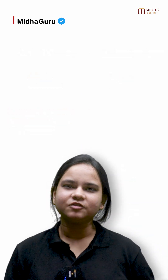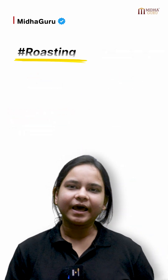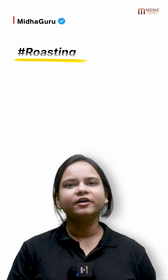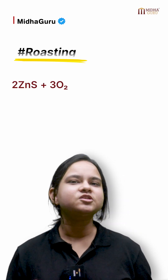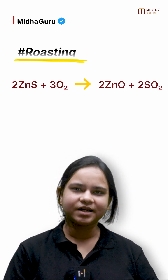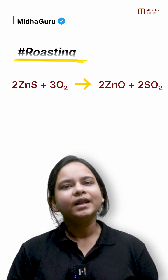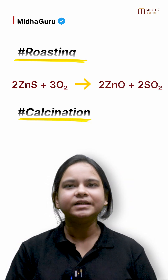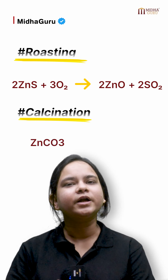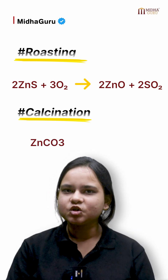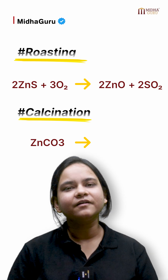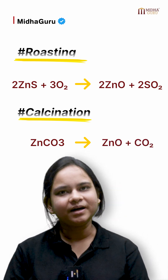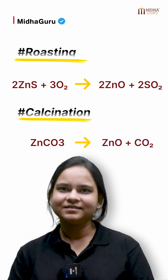Now let's check the equations for both. In case of roasting, for example, if we heat zinc sulphide ore in the presence of excess of oxygen, it gives out zinc oxide and sulphur dioxide gas. In case of calcination, if we heat zinc carbonate ore in the absence of sufficient oxygen, it gives out zinc oxide plus carbon dioxide. Thank you.